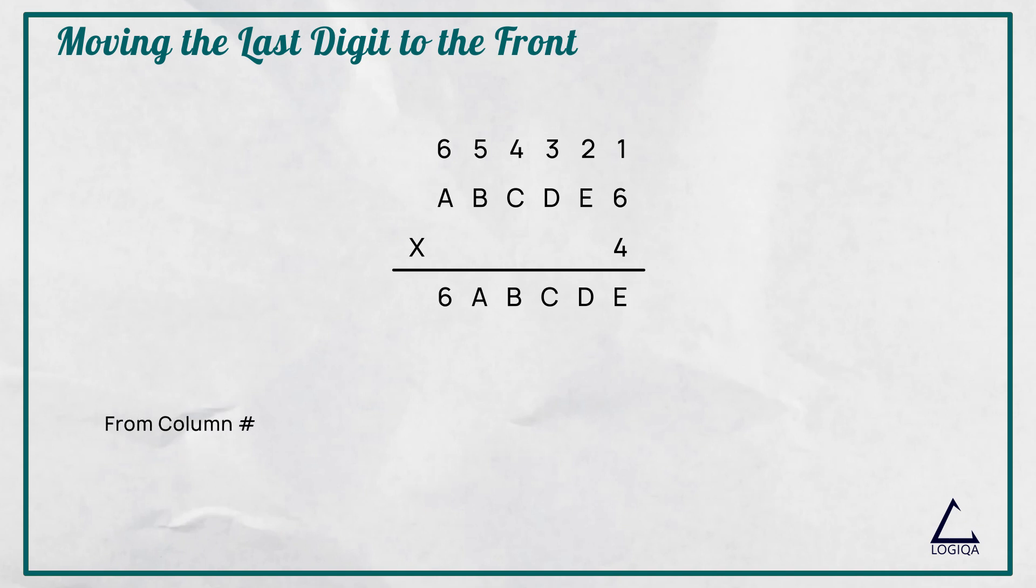So, starting from column 1, 4 into 6 is equal to E plus CF1. Therefore, E is equal to 4 and CF1 is equal to 20.